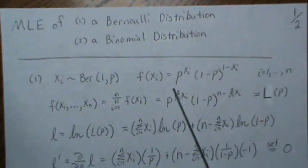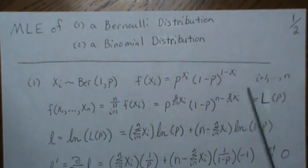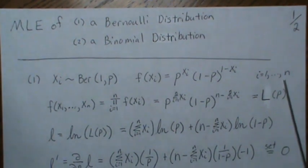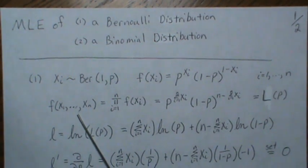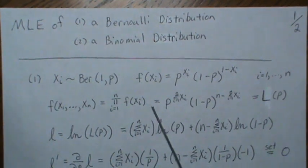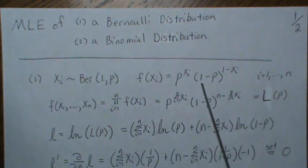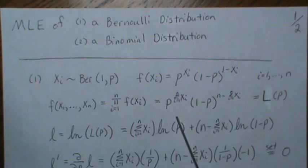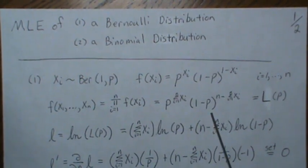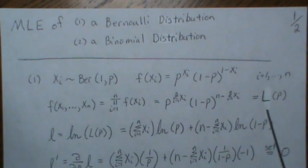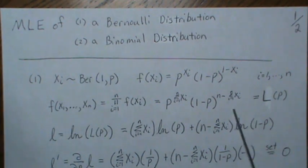So X is a Bernoulli, and this would be the distribution function. We have a sample of size n. The joint distribution function, since they're independent, is the product of the marginals. And then if you take this n times, you get this, and that's also the likelihood, and we consider it a function of p.